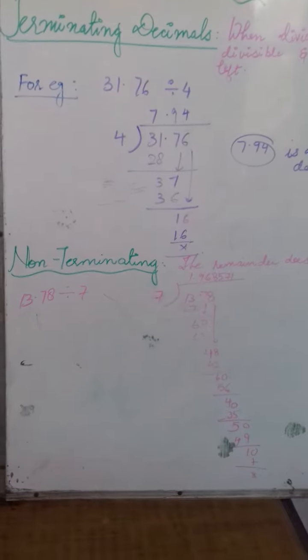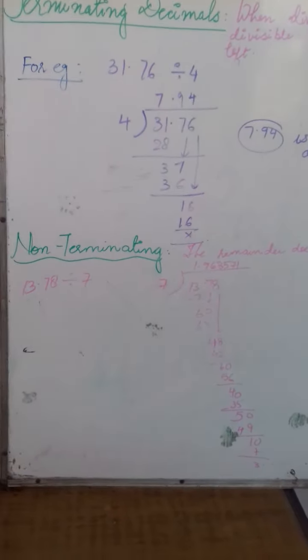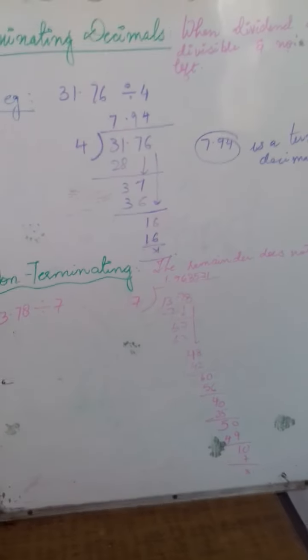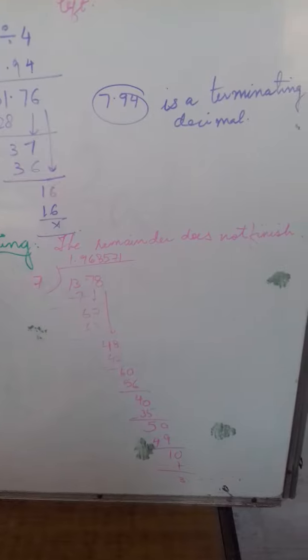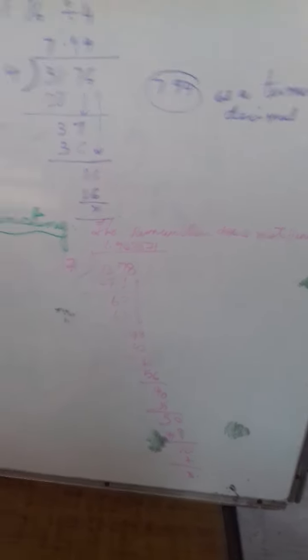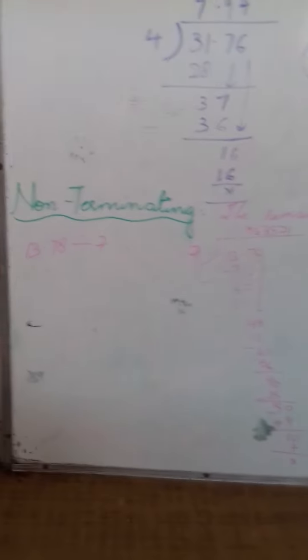Then comes non-terminating decimals. As the word itself says, non-terminating—it is not getting terminated. In this case, the remainder does not finish. It keeps on going.